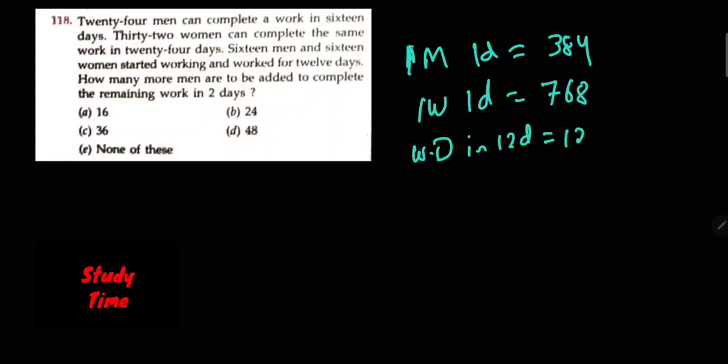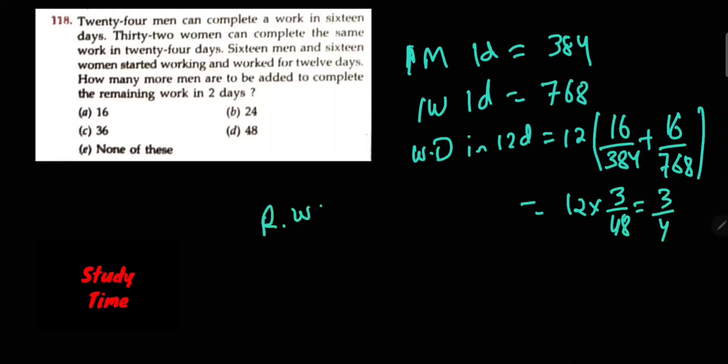Work done in 12 days: 12 × (16/384 + 16/768) = 3/4. So 3/4 of the work is done. Remaining work: 1 - 3/4 = 1/4.